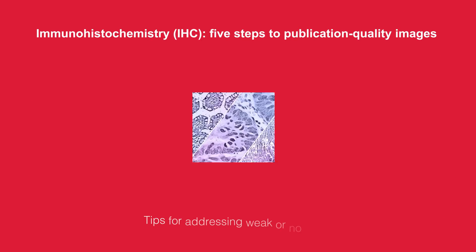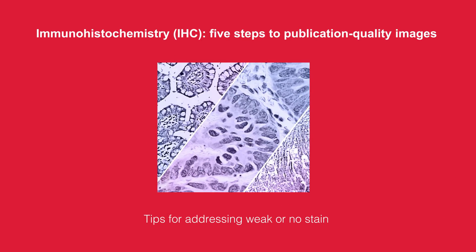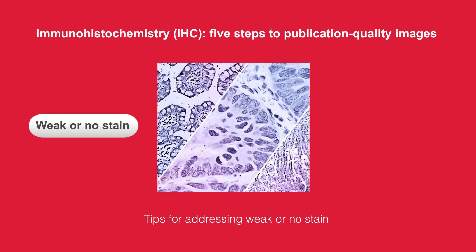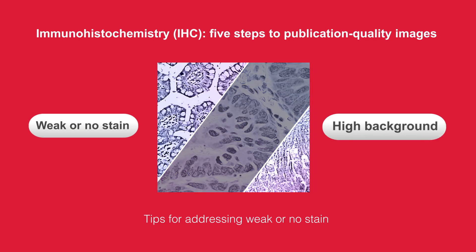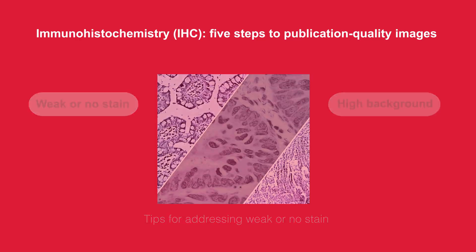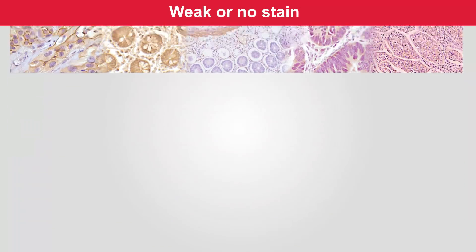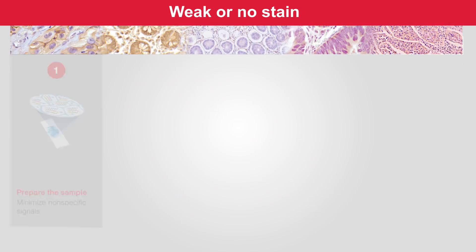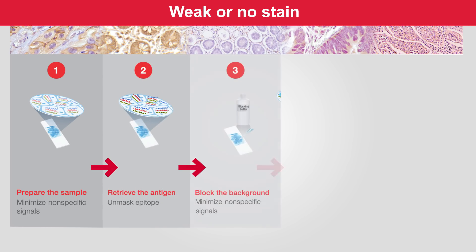Immunohistochemistry, or IHC, offers spatial visualization and location of an antigen in tissue sections. This application can be challenging, with problems generally falling into two categories: weak or no stain, and high background. Here are some troubleshooting tips to address weak or no stain for each of the five steps for successful IHC.